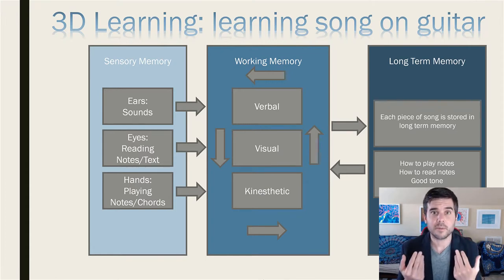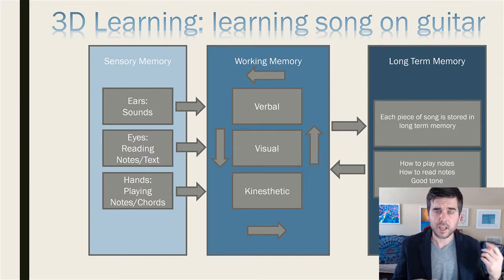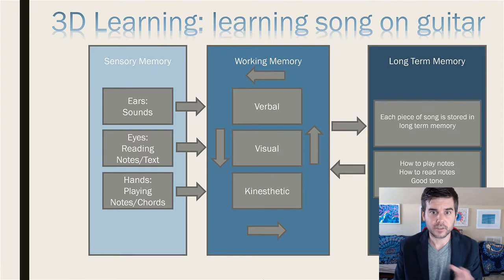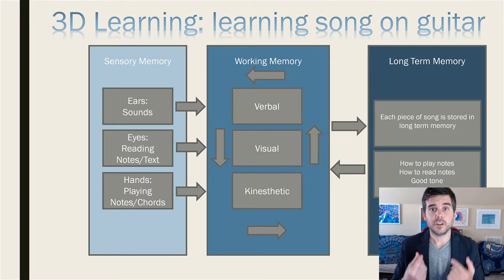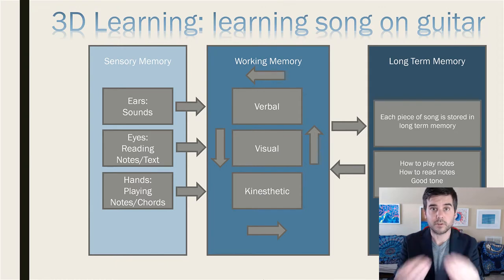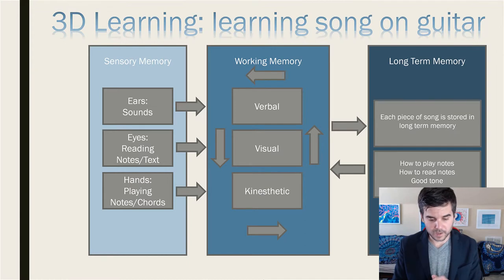So what's happening when you're doing that? In our sensory memory we have three different things happening: we have our ears processing information, our hands processing information, and our eyes processing information. So what's happening in working memory? We have this verbal channel - our verbal information - which is going to be everything that we're hearing, that we're playing, and what we're singing. There are two different things that we're hearing our bodies hearing.